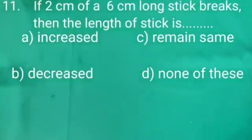Now let's solve our question number 11. If 2 cm of a 6 cm long stick breaks, then the length of stick is dash. We have 4 options for this question. Option A is increased, option B is decreased, option C is remained same, and option D is none of these.